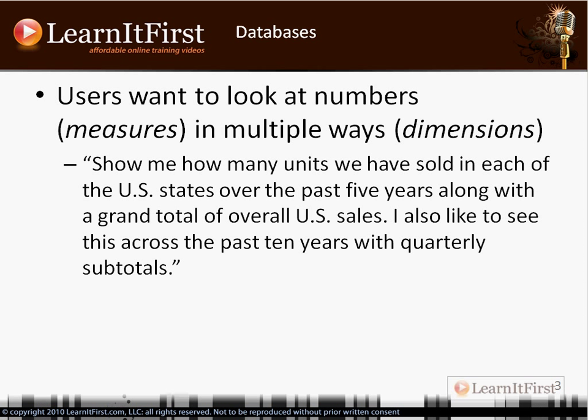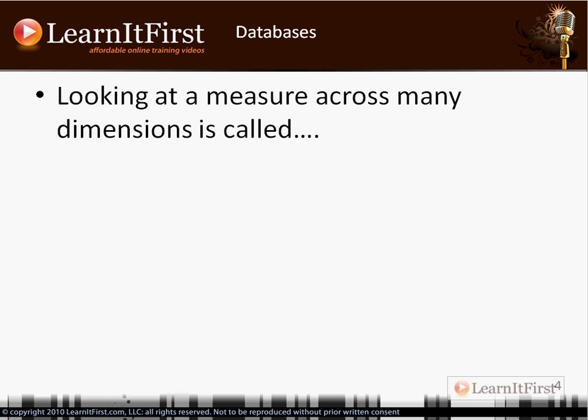Here's a quick example: show me how many units we have sold in each of the U.S. states over the past five years, along with a grand total of overall U.S. sales. I also want to see this across the past 10 years with quarterly subtotals. We're looking at different dimensions — a time dimension and a geography dimension — and the measure is units sold. So we have two different dimensions and a single measure.